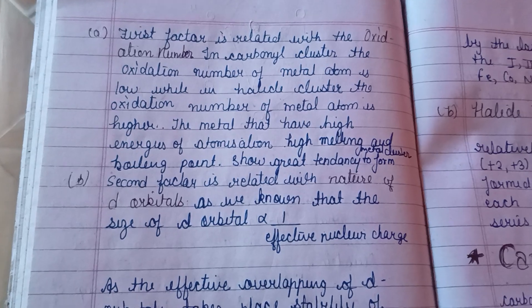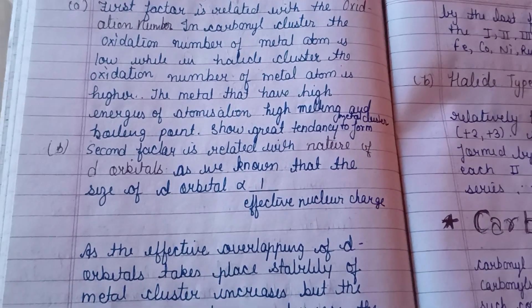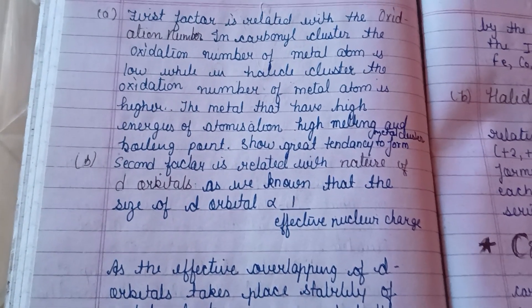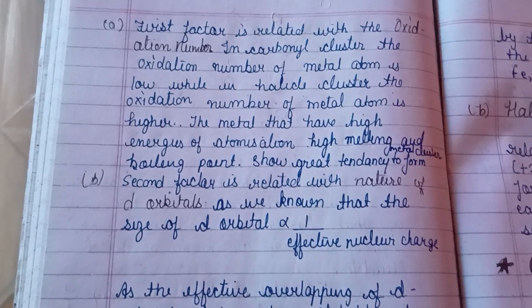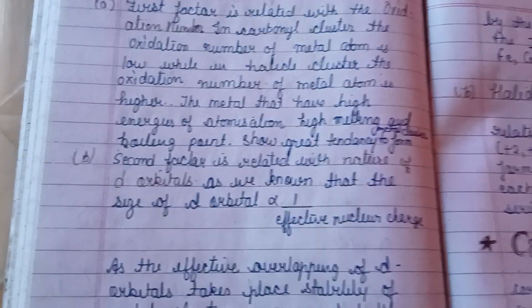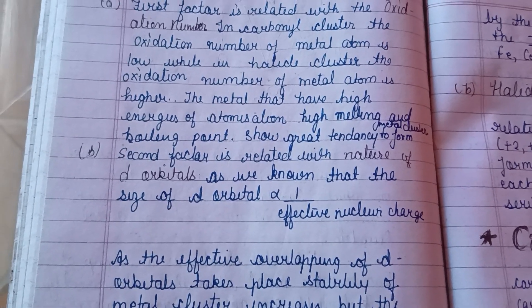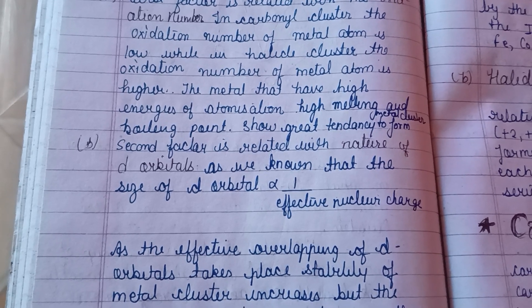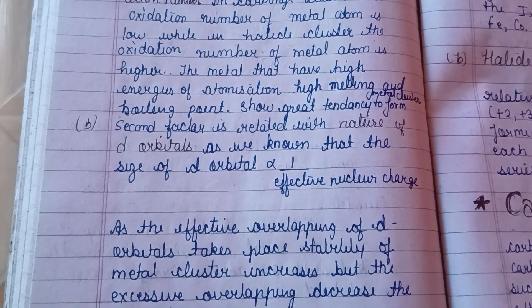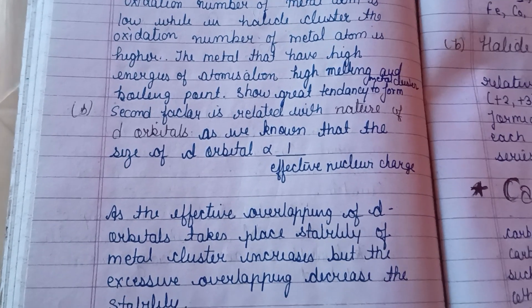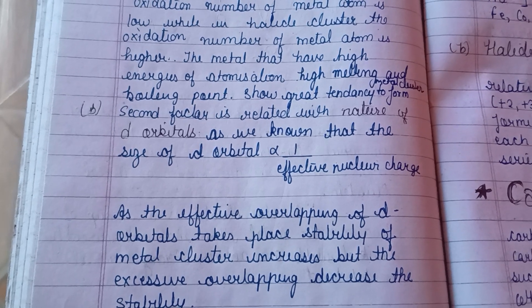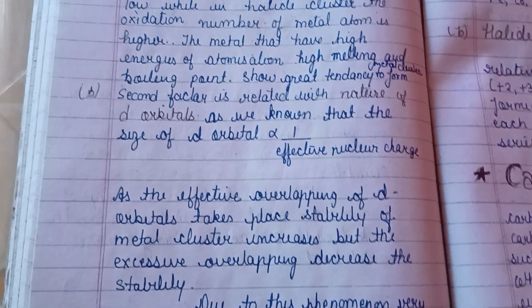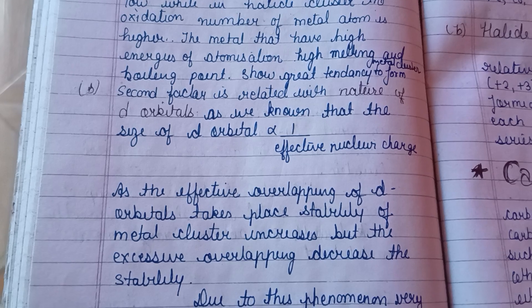The first factor is related to the oxidation number. In a carbonyl cluster, the oxidation number of the metal atom is low, while in a halide cluster the oxidation number of the metal is higher. Metals that have a higher energy of atomization and high melting and boiling points show a greater tendency to form metal clusters.